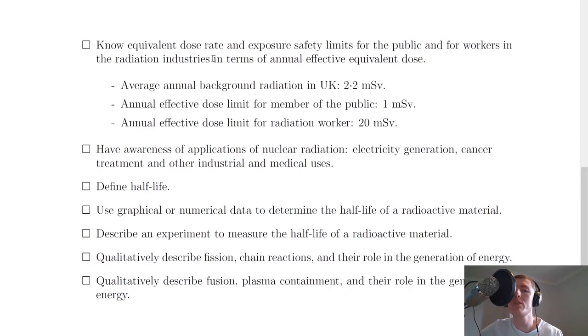Moving on it says to know the equivalent dose rate and exposure safety limits for the public and for workers in the radiation industries in terms of annual effective equivalent dose. Remember we looked at these three values during the theory video and you need to be able to remember them. The average annual background radiation in the UK is 2.2 millisieverts, the annual effective dose limit for a member of the public is 1 millisievert and the annual effective dose limit for a radiation worker is 20 times that which is 20 millisieverts.